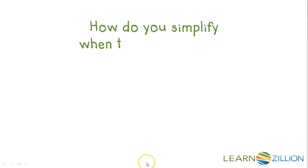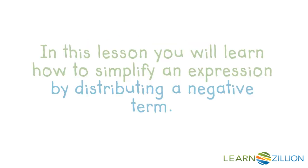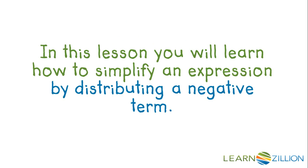How do you simplify when there is a negative term? For example, how do you simplify negative 3 times the quantity 2x minus 5? In this lesson you will learn how to simplify an expression by distributing a negative term.